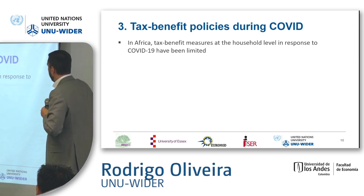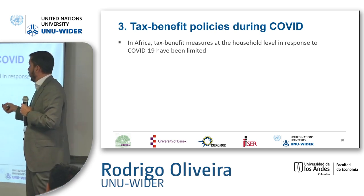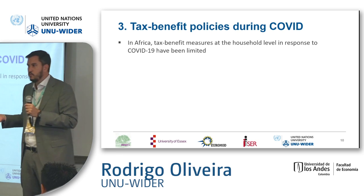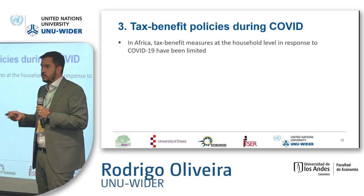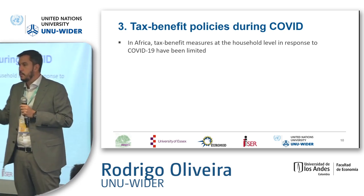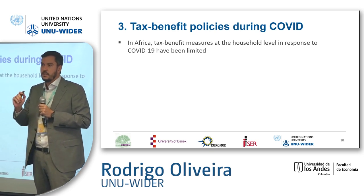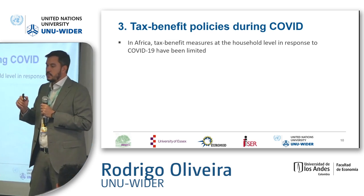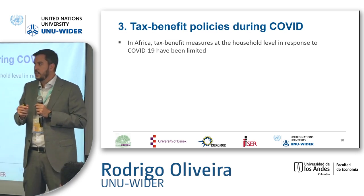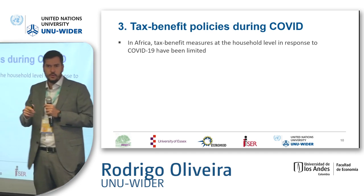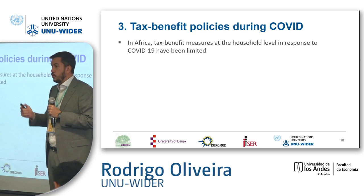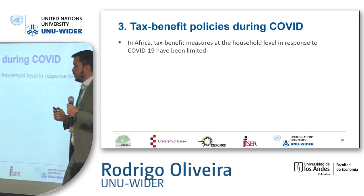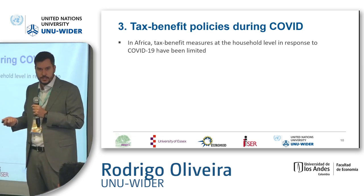What we observe is that in Africa, tax and benefit measures at the household level in response to COVID-19 have been very limited. The biggest explanation is that governments don't have the budget. For example, in Mozambique the cash transfer program called PSSB transfers about $8 per month per family, is paid by international organizations, and only covers one-third of eligible households. Basically, they don't have money to do social protection policies.